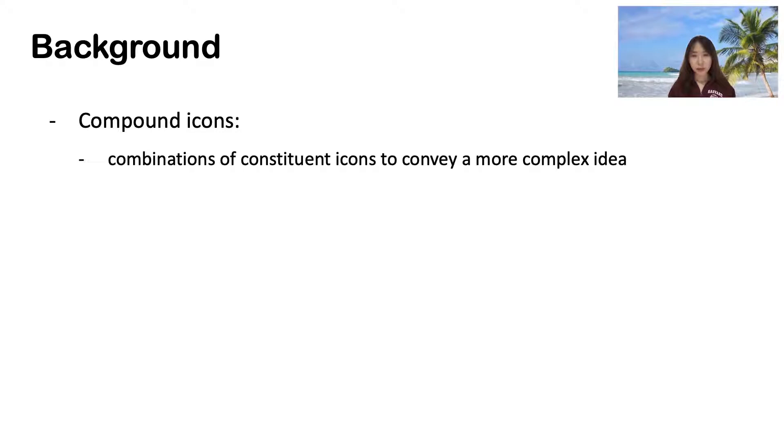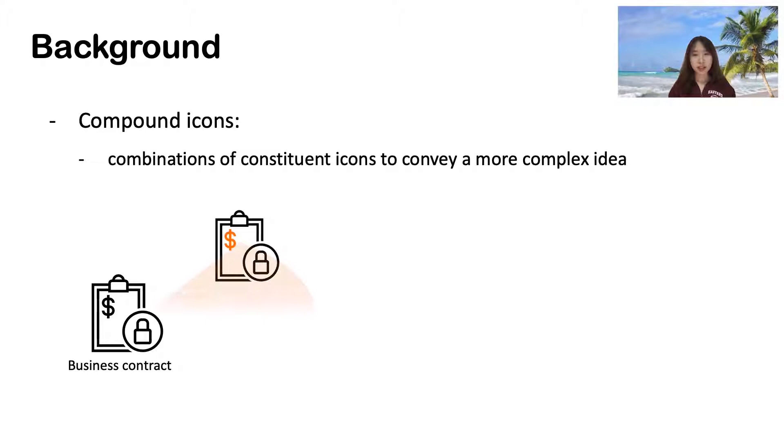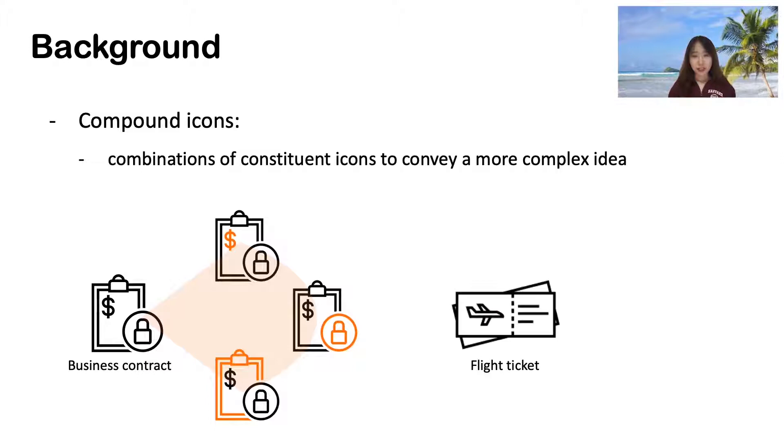For example, the icon for business contract is composed of a dollar sign for business, lock for security, and clipboard for contract. The icon for flight tickets is composed of an airplane and tickets.